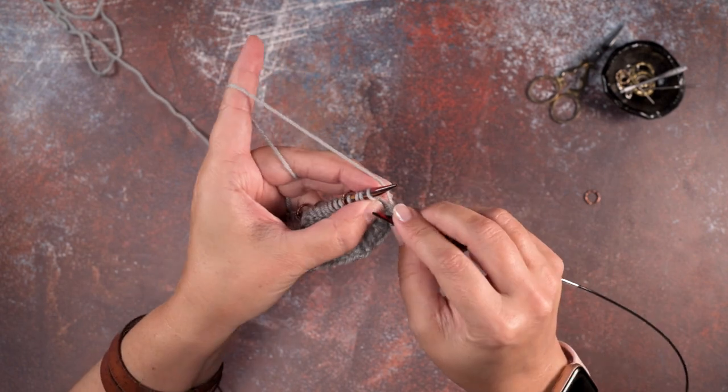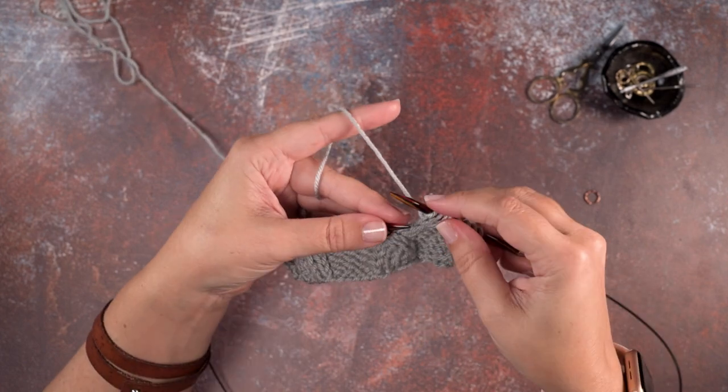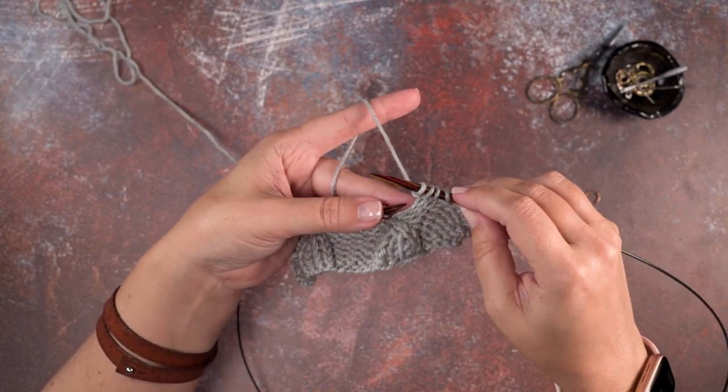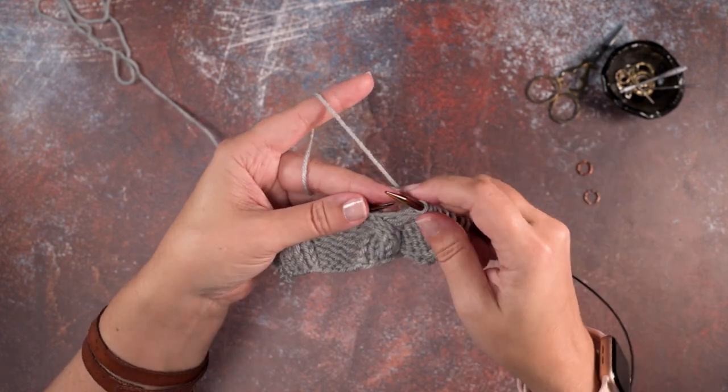Now we're just ready to work those off of our right hand needle. Knit two, purl one. There is our right leaning three stitch purl cable and I'm going to go ahead and show that to you guys one more time.